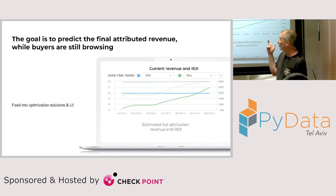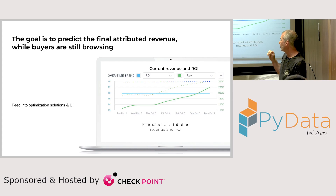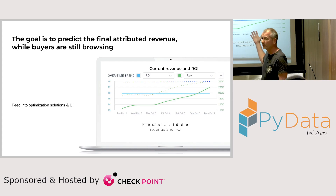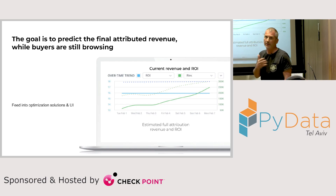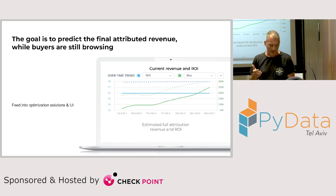The goal is to predict the final attributed revenue and conversion count while buyers are still browsing. We want to do two things with that: one is to show it to the advertiser so he can make better decisions, and also, as we manage optimization tools, we want to feed that information into optimization and make better decisions as fast as we can.